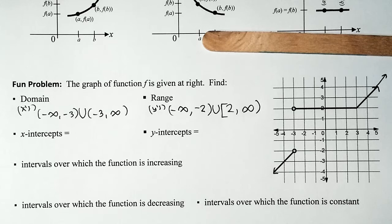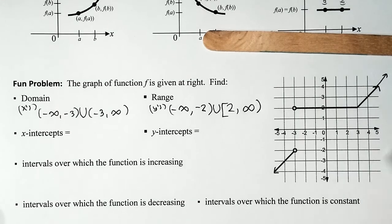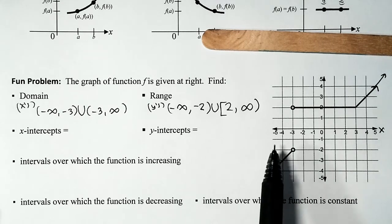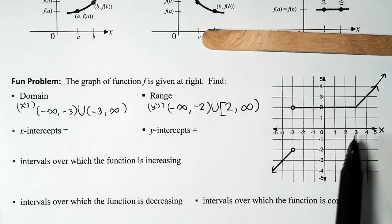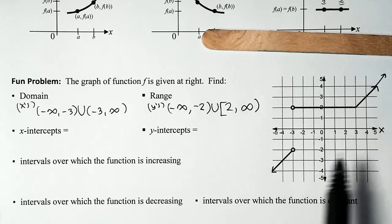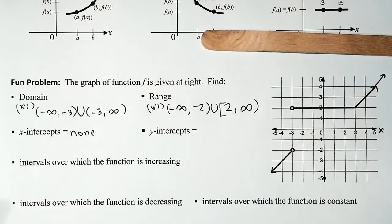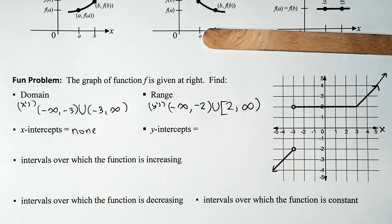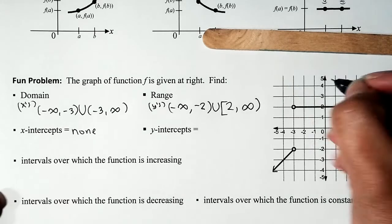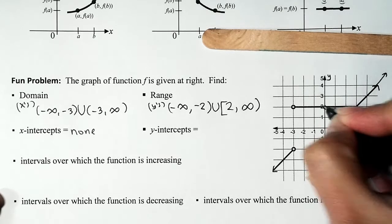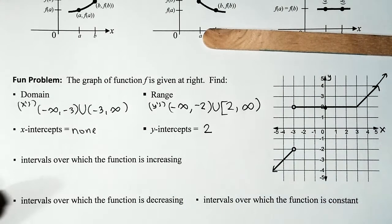X-intercept: the point where the graph crosses the x-axis. Looking at the x-axis, this graph does not intercept the x-axis at all, so there are none. Y-intercept: the point where the graph crosses the y-axis, which is the vertical axis. The graph intercepts the y-axis at 2, so the y-intercept is 2.